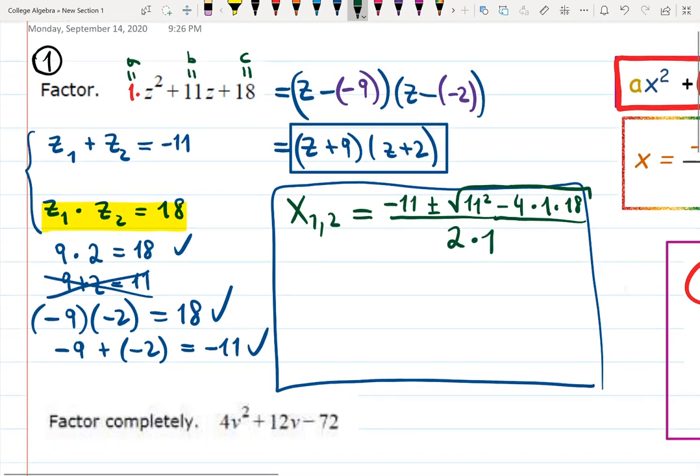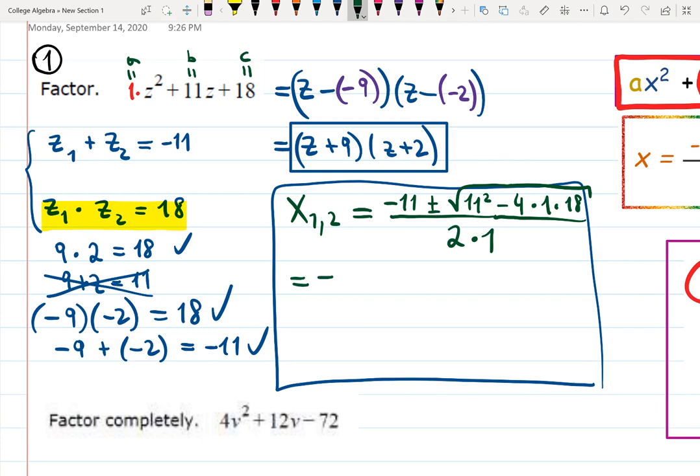All over 2a, that's 2 times 1. So, careful, simplify. Minus 11 plus minus. Everything divide by 2. And inside of the square root, you will have 121, that's 11 squared. You can check. Minus, and then 4 times 18 is 72.